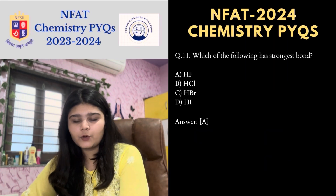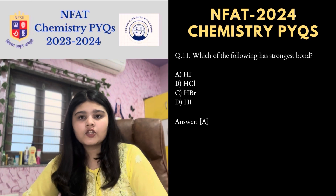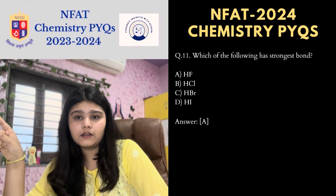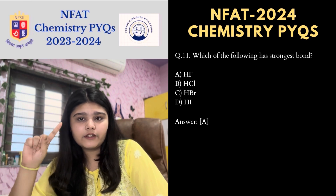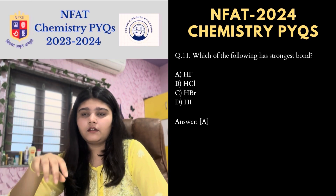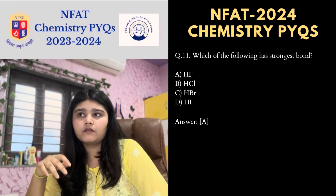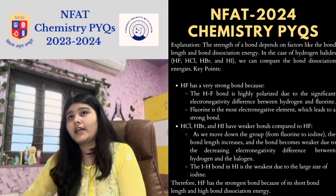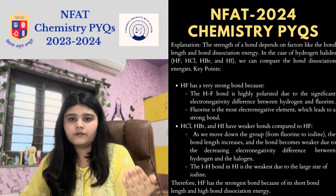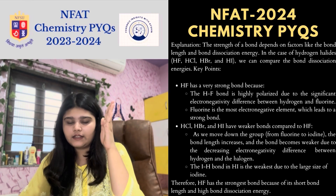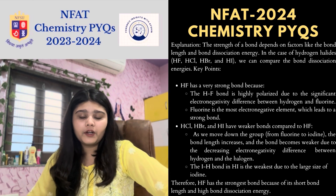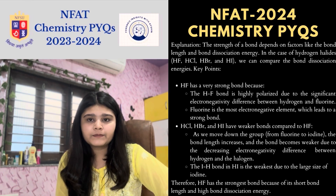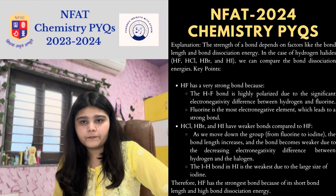First MCQ: which of the following has the strongest bond — HF, HCl, HBr, or HI? HF is the correct option because it is the most electronegative and is in the very first period. Bond strength depends on bond length. As we go from top to bottom in the periodic table, bond length increases, so HI has the lowest bond strength compared to HF.